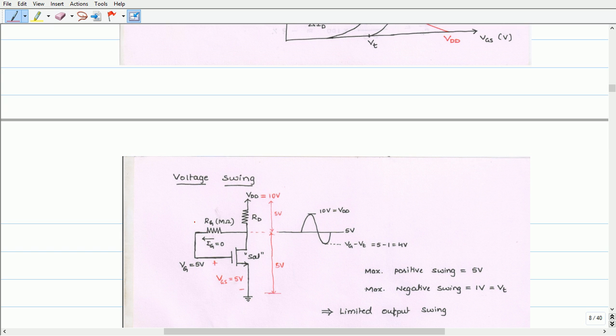Now let us try to look at voltage swing of the drain to gate feedback resistor biasing. Let us assume that VDD equals 10 volts. Therefore, as per the thumb rule, the drop across RD is 5 volts and drop across transistor is 5 volts. The voltage at the drain is 5 volts with respect to ground. Therefore, VG is also equal to 5 volts. Since the source is grounded, VGS equals 5 volts.